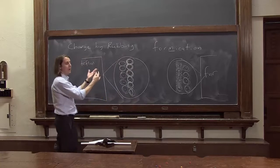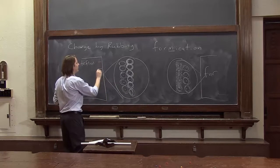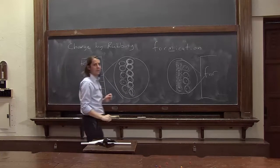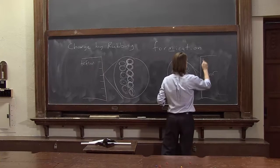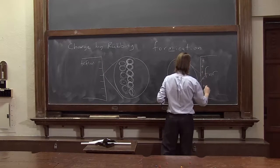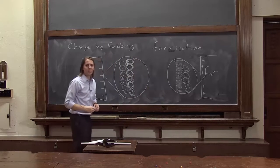So if we transfer some charge, now the balance is not neutral. Now the Teflon comes out negative, and the fur comes out positive. That's what's going on at a microscopic scale.